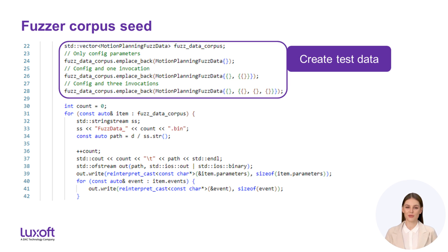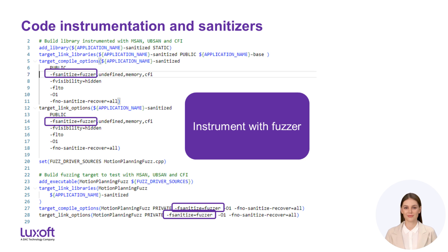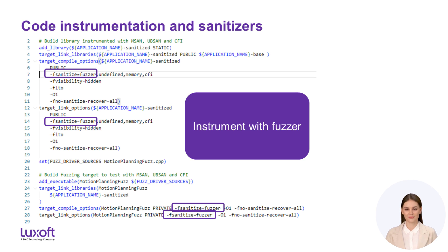We create several instances of the fuzz data structure with different numbers of invocations of the periodic function, then convert those structures to bytes and write them to files. The fuzzer will discover those files and use them to seed the data corpus. Gray box fuzzers such as libFuzzer are based on code coverage — they monitor the software under test and keep track of execution paths they discover. This requires adding certain compiler and linker flags to the build file. Because code instrumentation incurs a significant performance penalty, we need to create a separate build configuration to perform fuzzing.